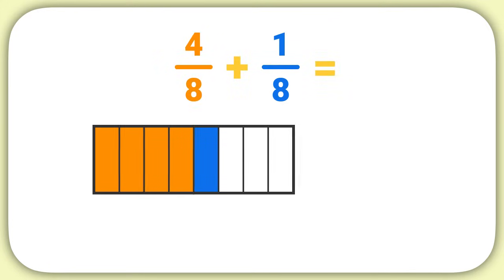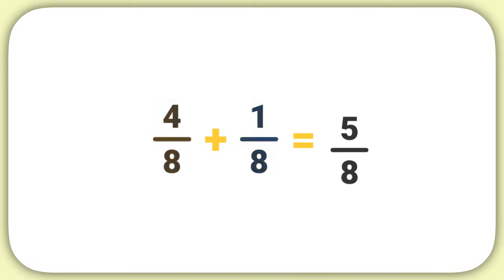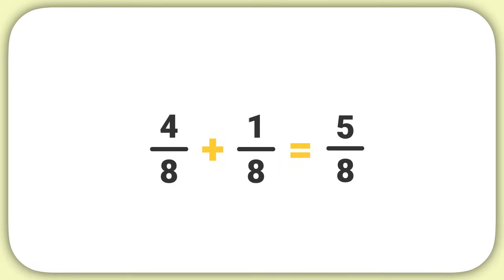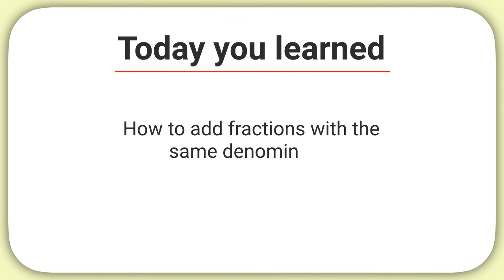Now this model shows us a fraction. Five pieces are shaded, so the numerator is five, and there are eight pieces total, so the denominator is eight. Four-eighths plus one-eighth equals five-eighths. Today you learned how to add fractions with the same denominator.